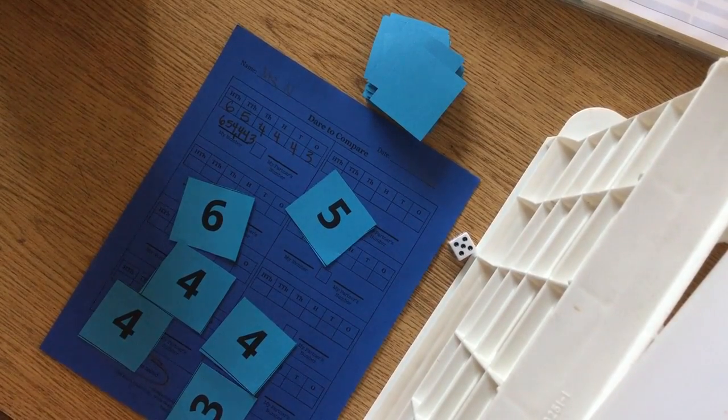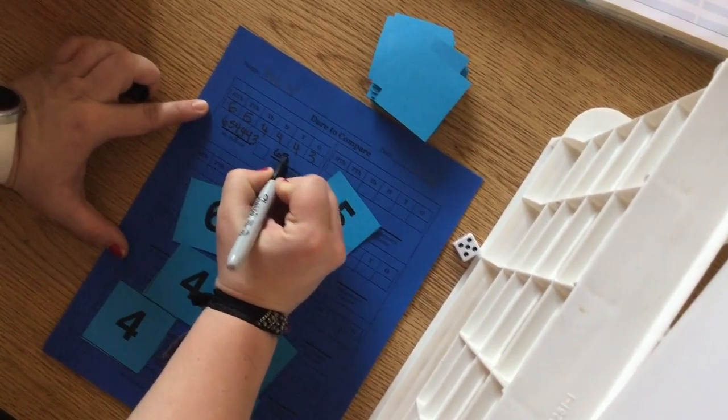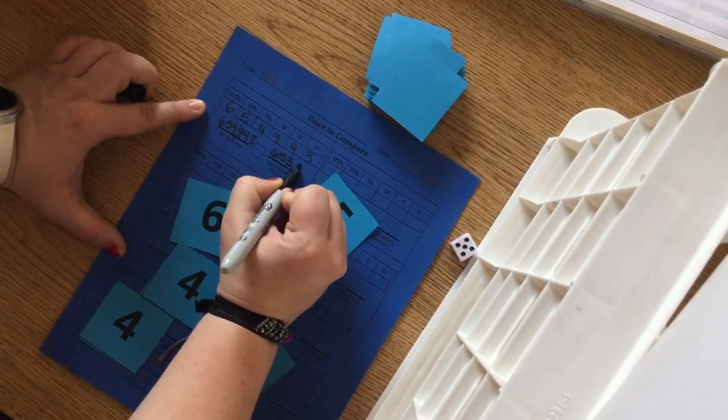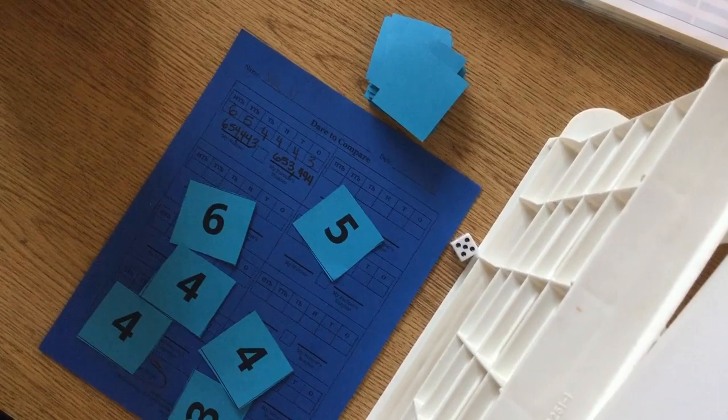My partner, let's say, chose to do 653,444. At that point, you need to decide who has the biggest one.